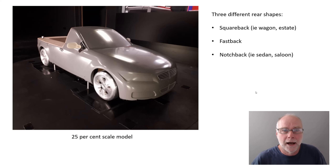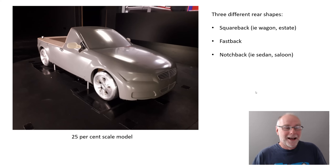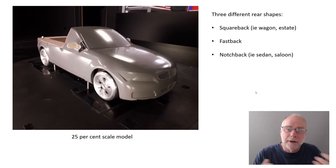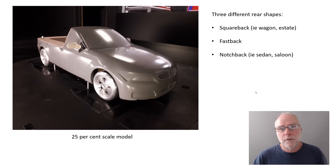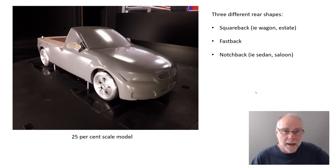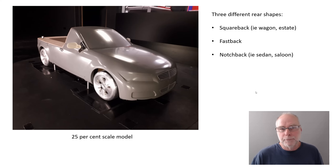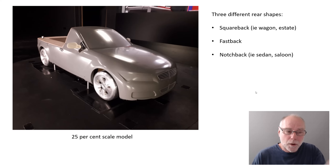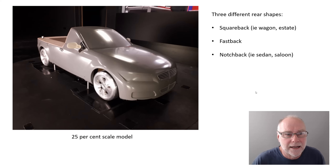Here's the front part of the model — you can see it looks rather like a ute. On the back of that model they put the different rear-end geometries: a squareback, which we sometimes call a wagon or an estate; a fastback with one curve all the way to the rear of the car; and a notchback, which we sometimes call a sedan or a saloon. It's a 25% scale model, but as you can see, it's quite detailed.